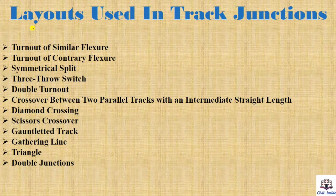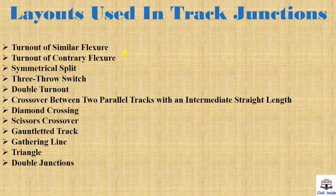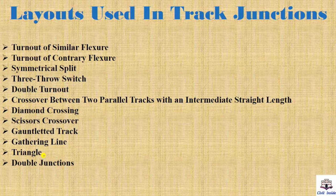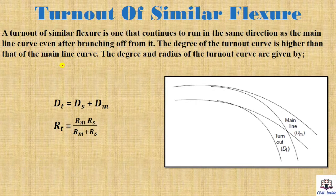We will study these layouts one by one using track junctions. The layouts are: turn out of similar flexors, turn out of contrary flexors, symmetrical split, three throw switch, double turn out, crossover between two parallel tracks with an intermediate straight length, diamond crossings, scissors crossover, gauntlet track, gathering line, triangle, and double junction.